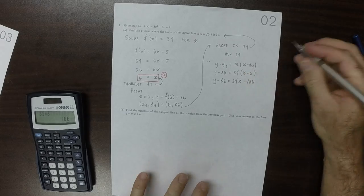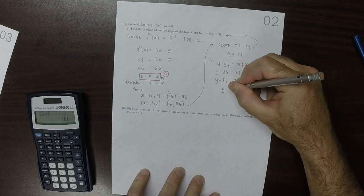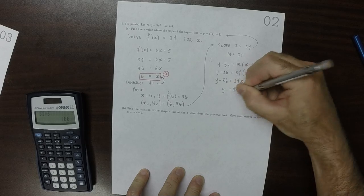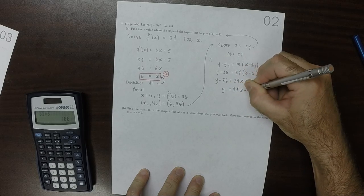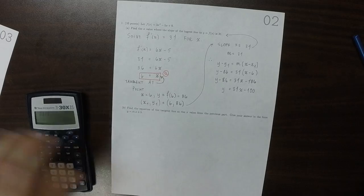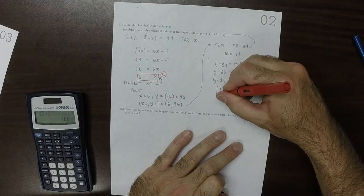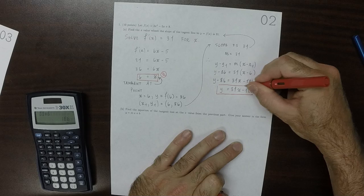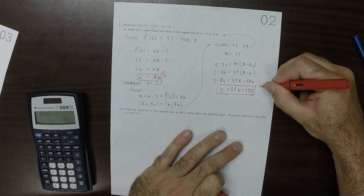Now if you add 86 to both sides, y is 31x minus 100. And this is the answer to part b.